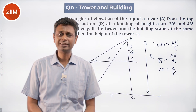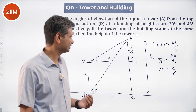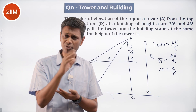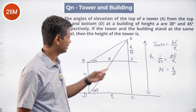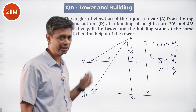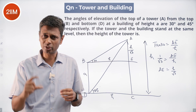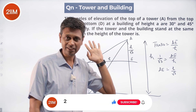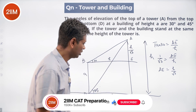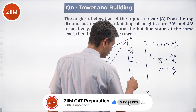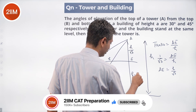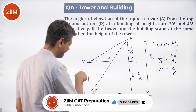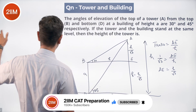This is a 30-60-90 triangle; the ratio of the two perpendicular sides is 1 to √3. The side opposite the 30-degree angle is the shorter side — this is 1, that is √3. Dividing gives AE = H/√3, so CE equals H minus H/√3, and since CE equals the building height a, we have a = H minus H/√3.